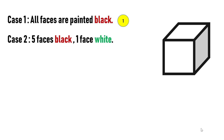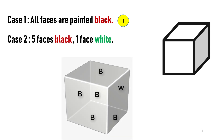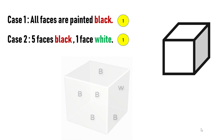In case two, let's assume five faces are painted black and one face is painted white. In this case, there is only one possibility. Since the cube is a symmetrical figure on all its faces, six cases will reduce to one. That is, even if you paint white on all faces at different instances, it looks the same.